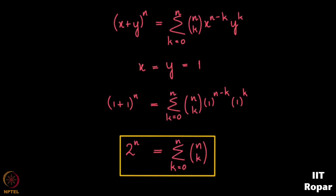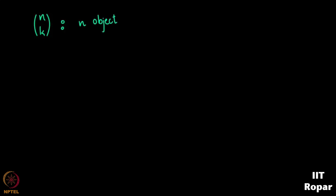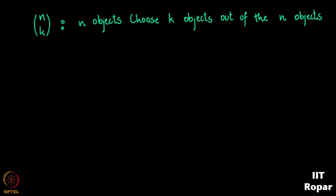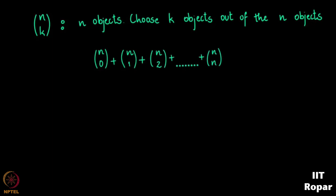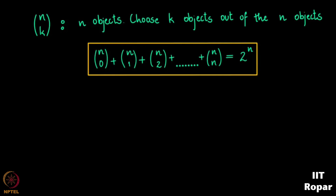What does this actually mean? If we have n objects and we add up the number of ways to choose 0, 1, 2, ... up to n objects from them, the total equals 2^n. This is a beautiful connection between the binomial theorem, combinatorics, and powers of 2. Next we will move on to the generalization of the binomial theorem and solve problems.